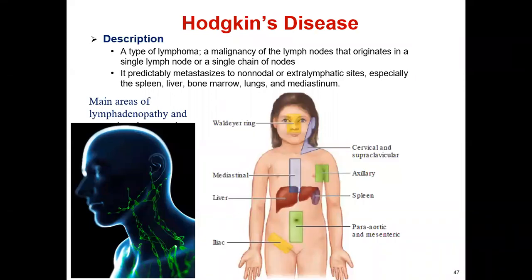Here we are going to talk about lymphoma — the cancer of the lymph node. Lymphoma is two types: Hodgkin and non-Hodgkin lymphoma. Hodgkin lymphoma is a malignant cancer of the lymphatic system involving the immune cells, causing swelling of lymph nodes in the neck or armpit. Patients present with fever, night sweats, difficulty breathing, and weight loss.